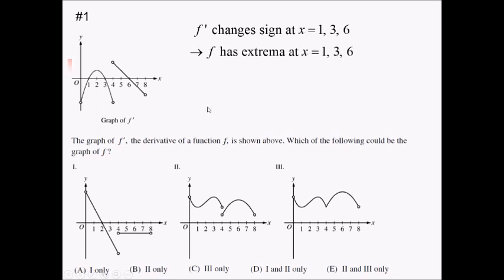Taking a look at my three graphs: Graph 1 at x equals 1 does not have a max or a min, so we can eliminate graph 1. Graph 2 at 1 has a max, along with at 3 and at 6 — it has a min, it has an extreme, one way or another, at 1, 3, and 6.